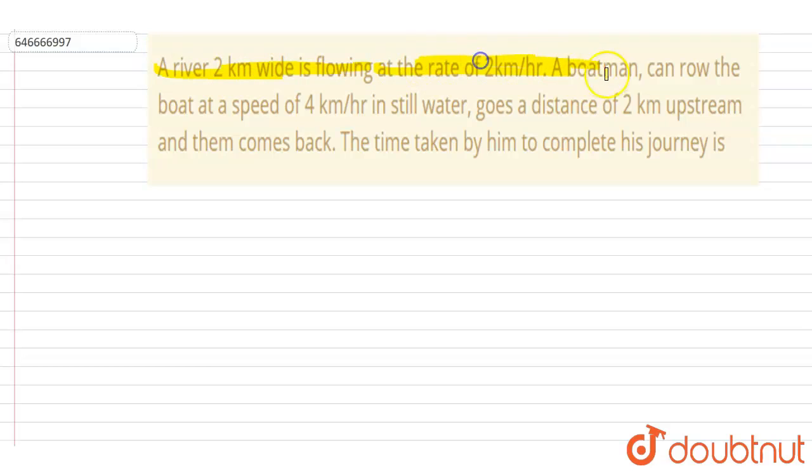Hello everyone. A river two kilometer wide is flowing at a rate of two kilometer per hour. A boatman can row the boat at a speed of four kilometer per hour in still water, goes a distance two kilometer upstream and then comes back.